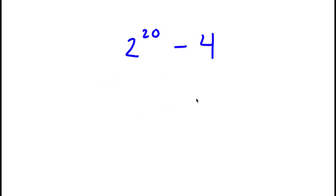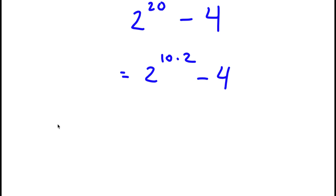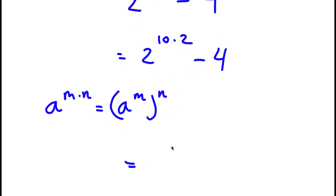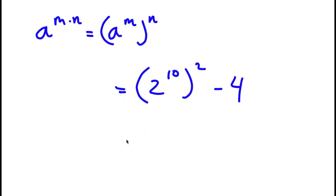In this problem I have 2 to the power of 20 minus 4. I'm going to start by rewriting 2 to the power of 20 as 2 to the power of 10 times 2, giving 2 to the power of 10 times 2, minus 4. Using the rule that a to the power of m times n equals a to the power of m, to the power of n, I rewrite this as 2 to the power of 10, to the power of 2. Now, 2 to the power of 10 equals 1,024, so I have 1,024 to the power of 2, minus 4.